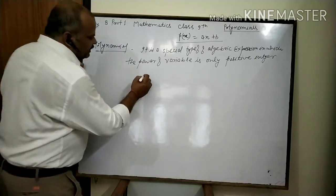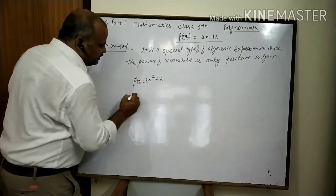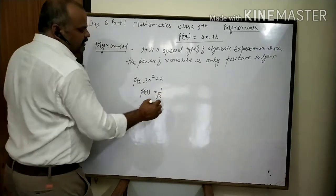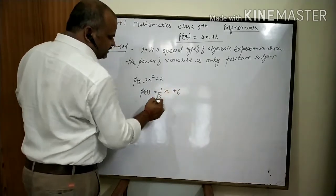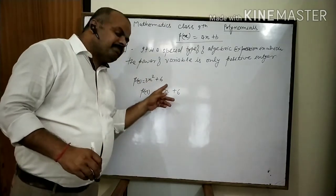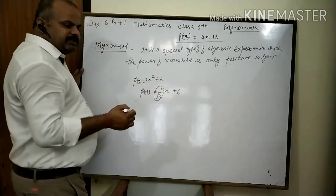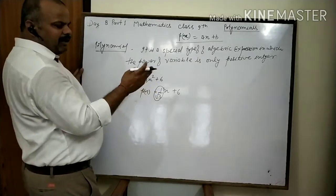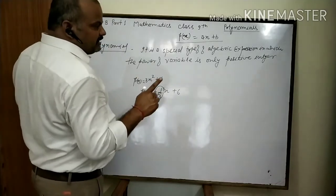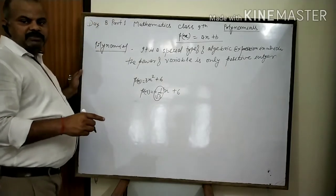For example, 3x² + 6 is a polynomial. Now consider P(x) = (1/√3)x + 6. We only check the power of the variable. Here 1/√3 is the coefficient — the coefficient can be in root, decimal, or fractional form. What matters is that the power of the variable is a positive integer, so this is still a polynomial.